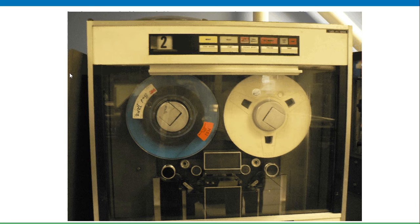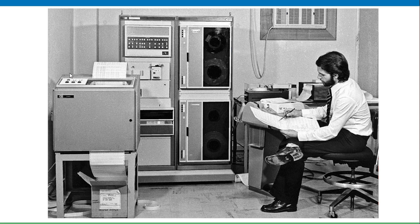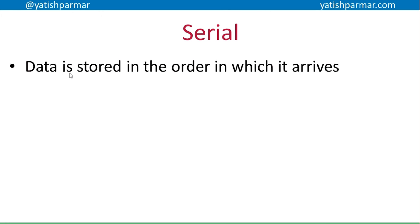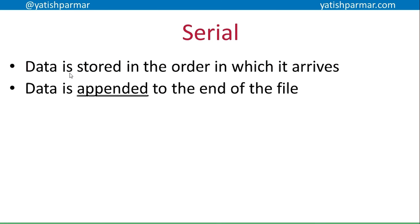Serial files basically stem from the days of using magnetic tape to store data. You start at the beginning of the tape and work your way towards the end — you can go backwards and forwards, but you are retrieving data in an orderly sequence. With a serial file, data is stored in the order in which it arrives. This is the only time where I'll accept you using the word 'chronological.'